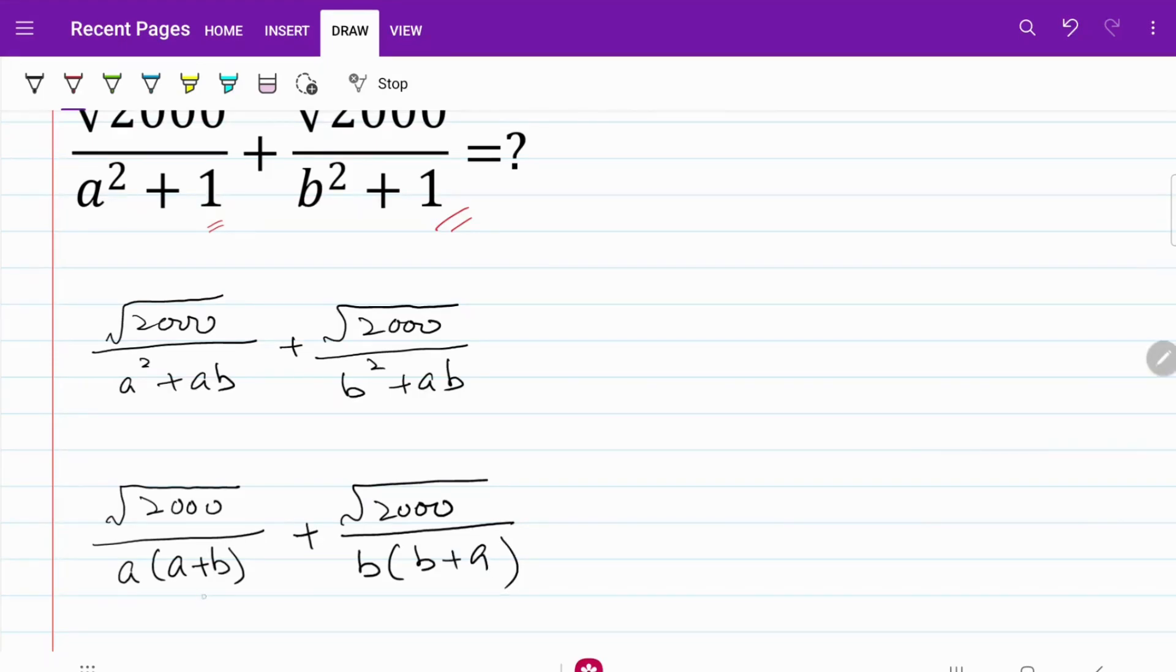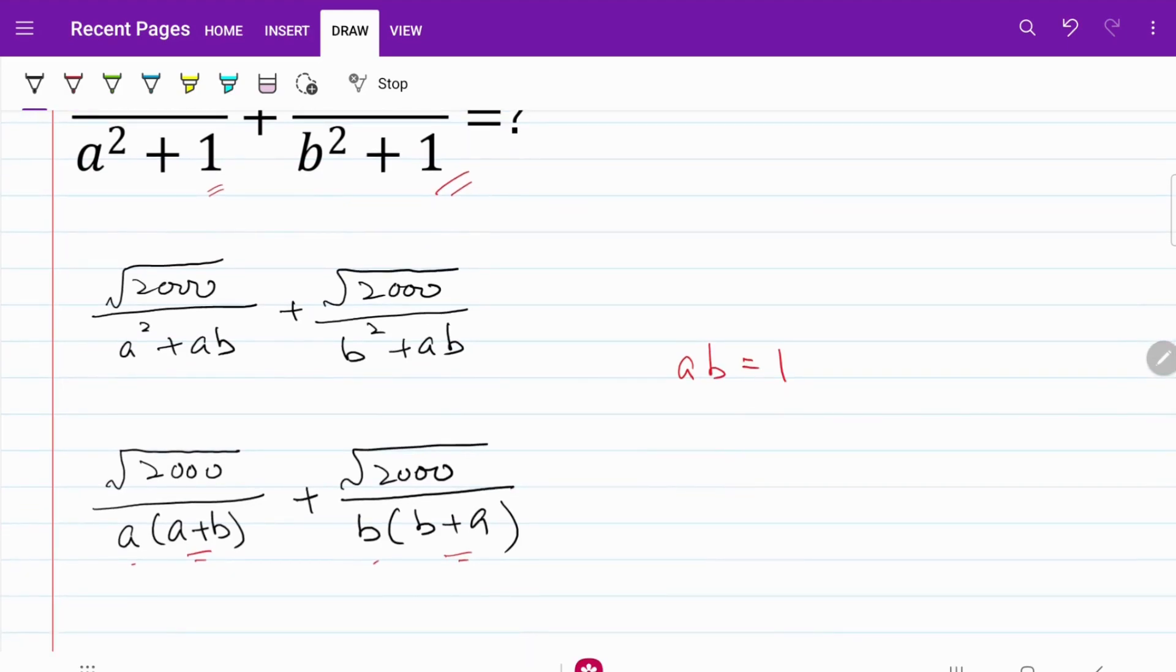From here, if I want to keep a plus b as the common term of the denominator, I need to find a way to get rid of a and b. And to do that, remember, early in the question we have established that ab is equal to 1. So in other words, this is what I can do.